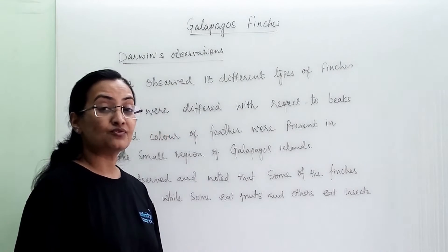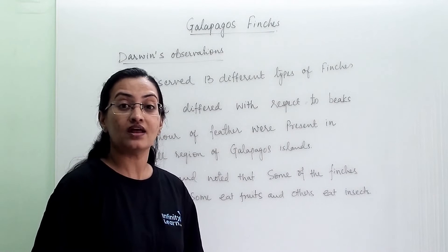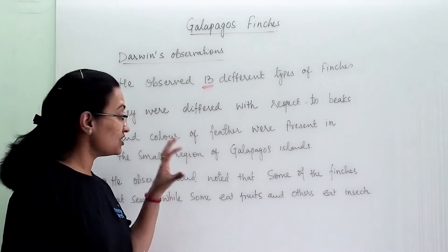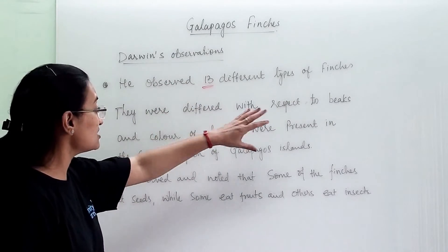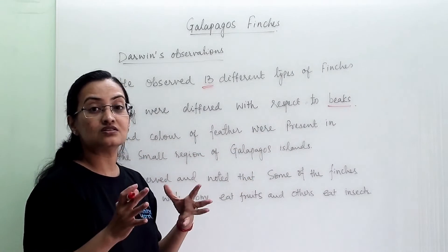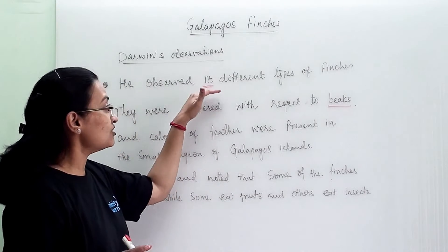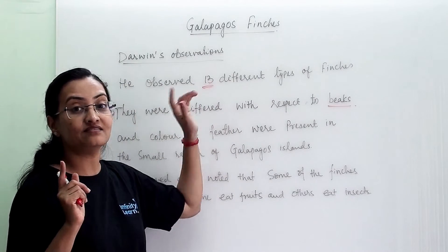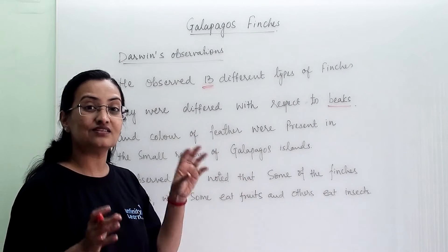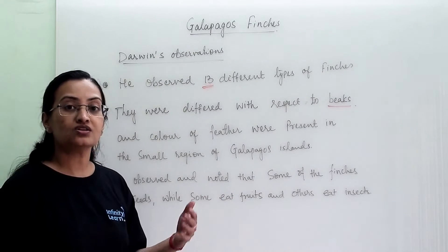At the Galapagos, Charles Darwin observed 13 different varieties of finches. They all have different beaks, different body sizes, and different feather colors. He found all 13 types of finches in this small region of the Galapagos Islands. Even in this small area he was able to see 13 different varieties of one bird — finches — and he noted down all the observations.